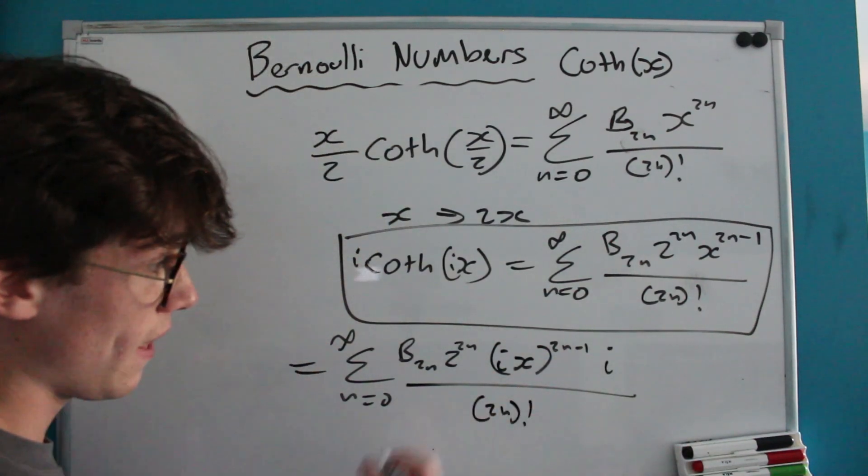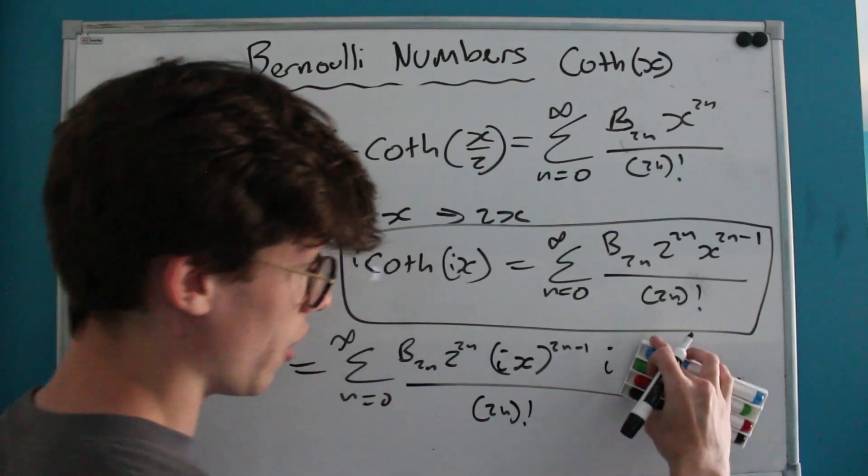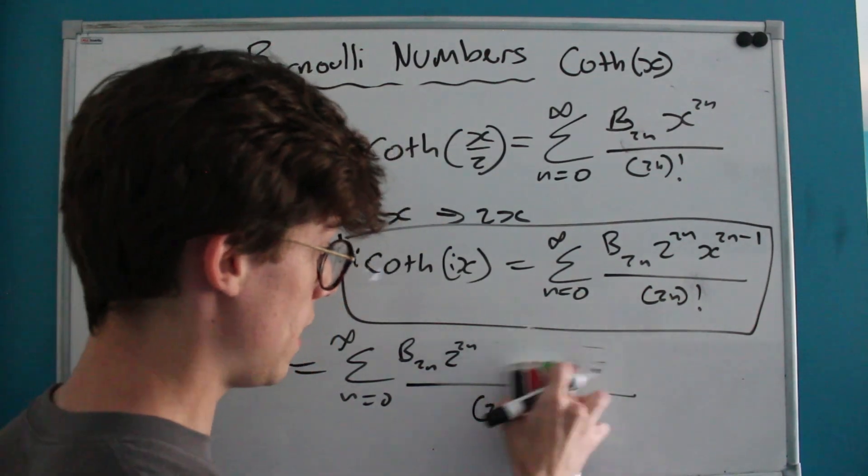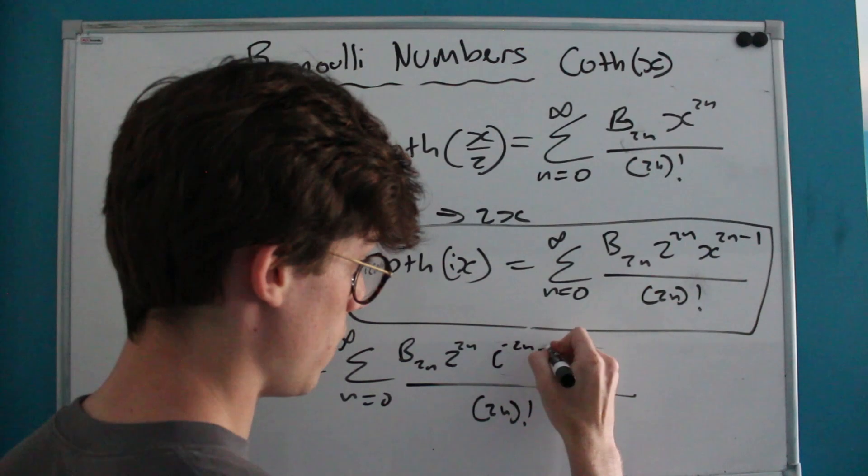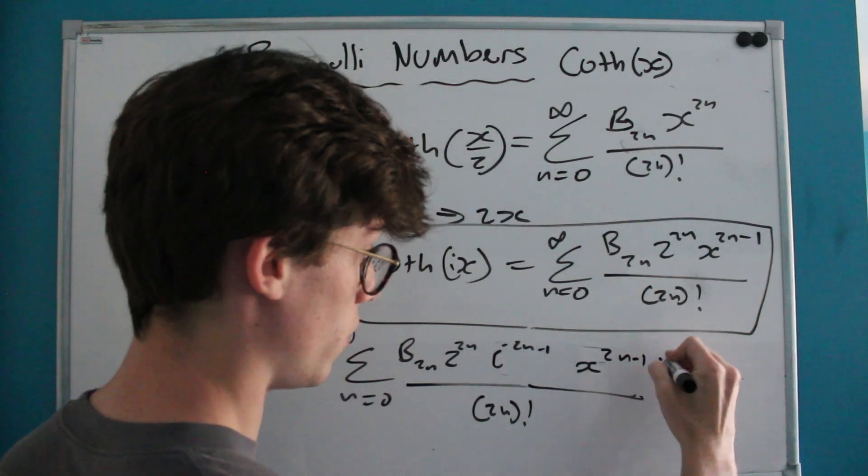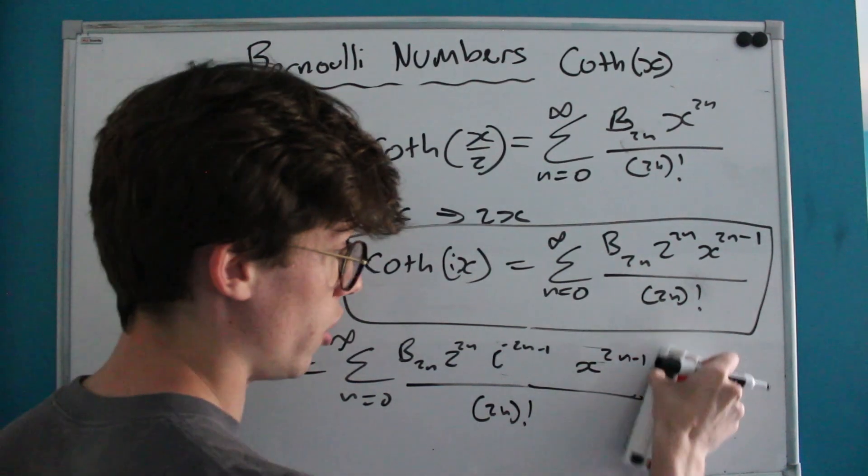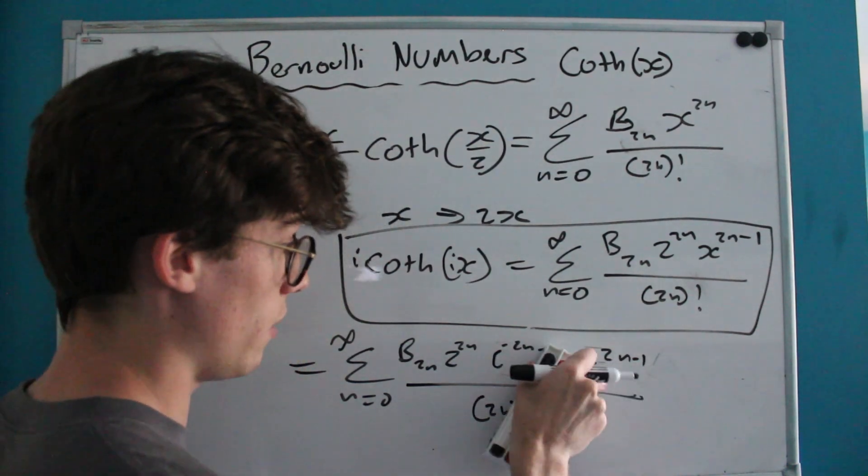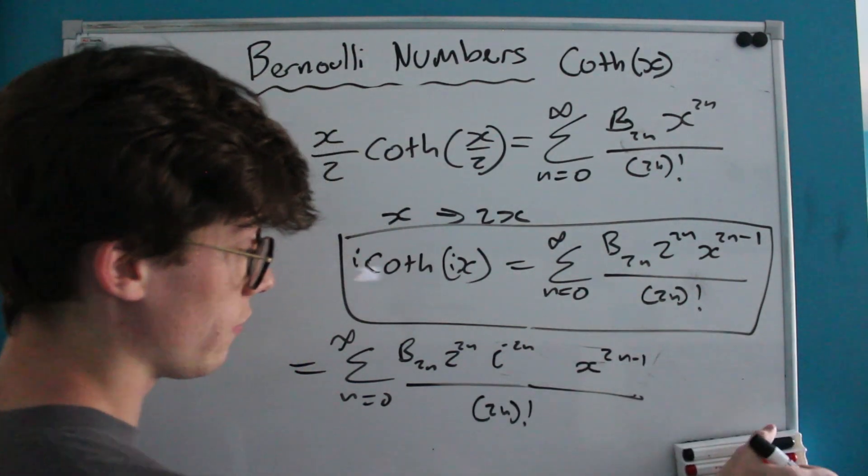Of course, we can split our i and our X up into i^(2n-1) multiplied by X^(2n-1) times i. We've got an extra i over here that's going to cancel out with our negative 1 here.